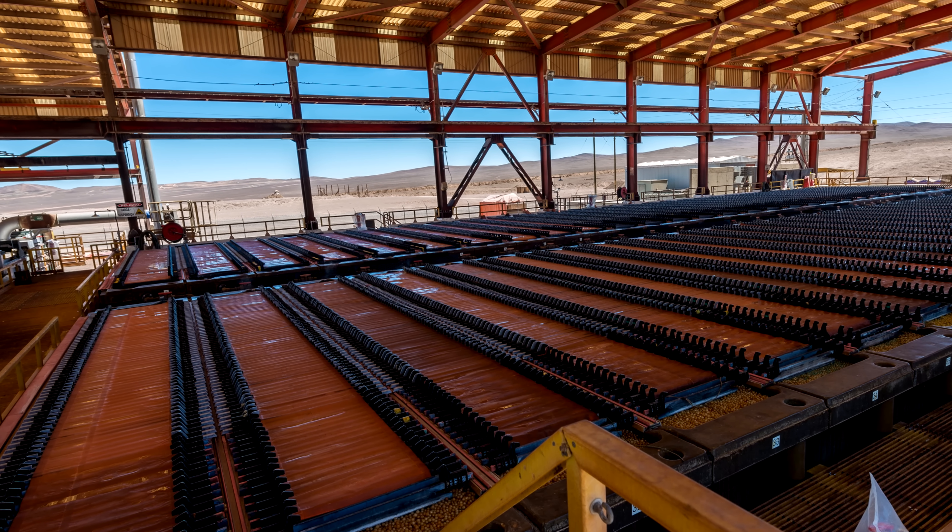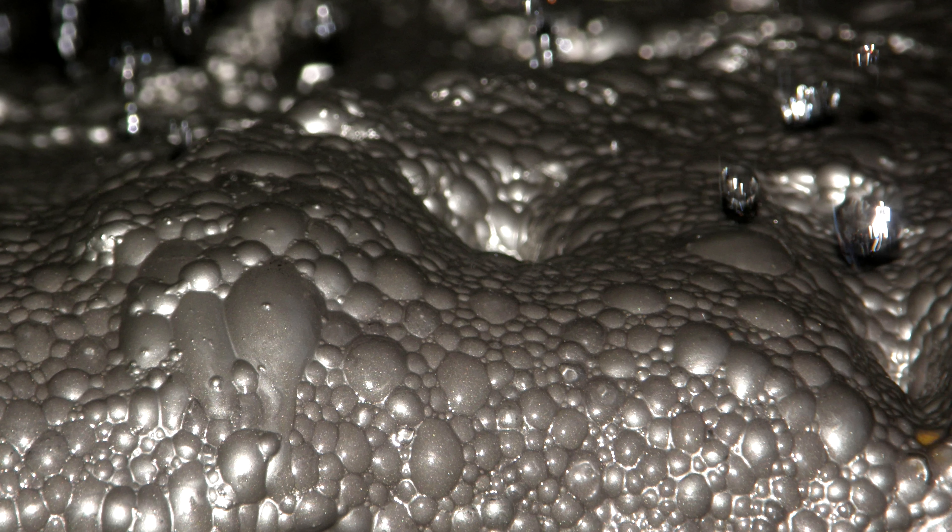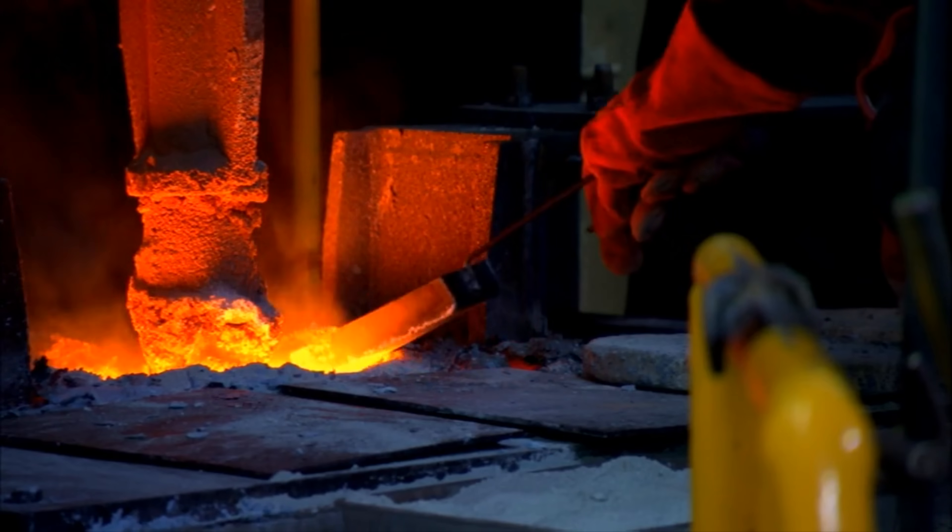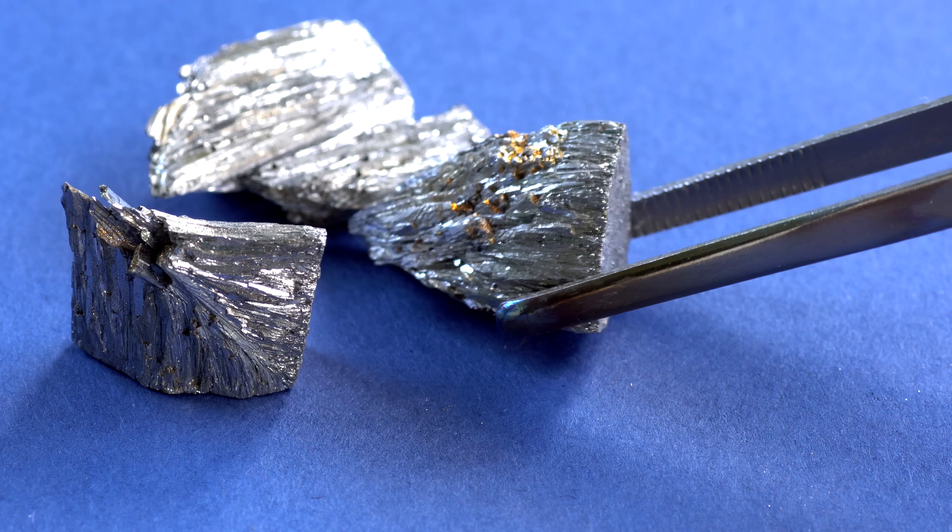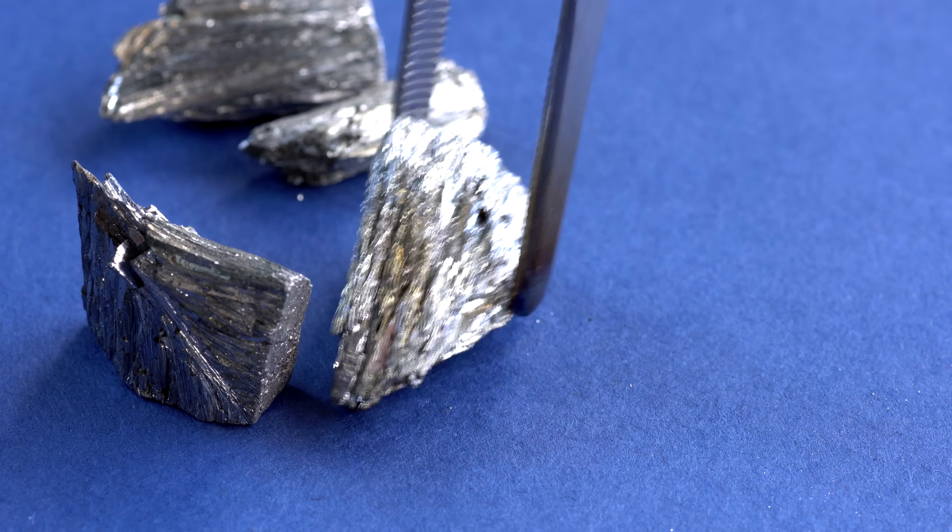Today tellurium is obtained when copper electroplating produces byproducts in the form of tellurides of precious metals, which later are reduced to metallic tellurium. After refining, pieces of this metal look very similar to pieces of any other metal.